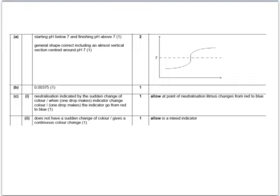Here are the answers. The graph that we drew, so long as it starts low, starts well below pH 7, finishes above pH 7, that's one mark, and if the general shape includes a very sharp change at pH 7, that's your second mark. Neutralisation is that we'll see a sudden colour change, or one drop making an indicator change, or one drop making the indicator go from red to blue. And a universal indicator doesn't give a sudden change of colour, it gives a continuous colour change, or it's a mixed indicator.